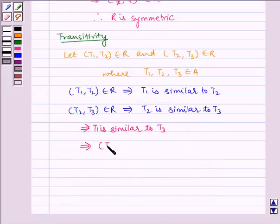This implies (T1, T3) ∈ R. Therefore, R is transitive.